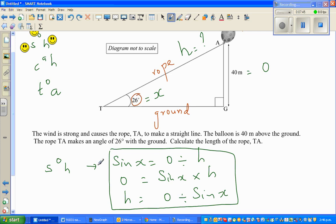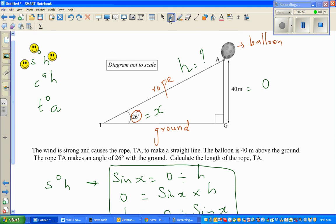This is sine is O divided by H. So here, using this formula, I can say H is O divided by sine of X, or sine X. So just substitute the value: O is 40 divided by sine, and what is X? 26.